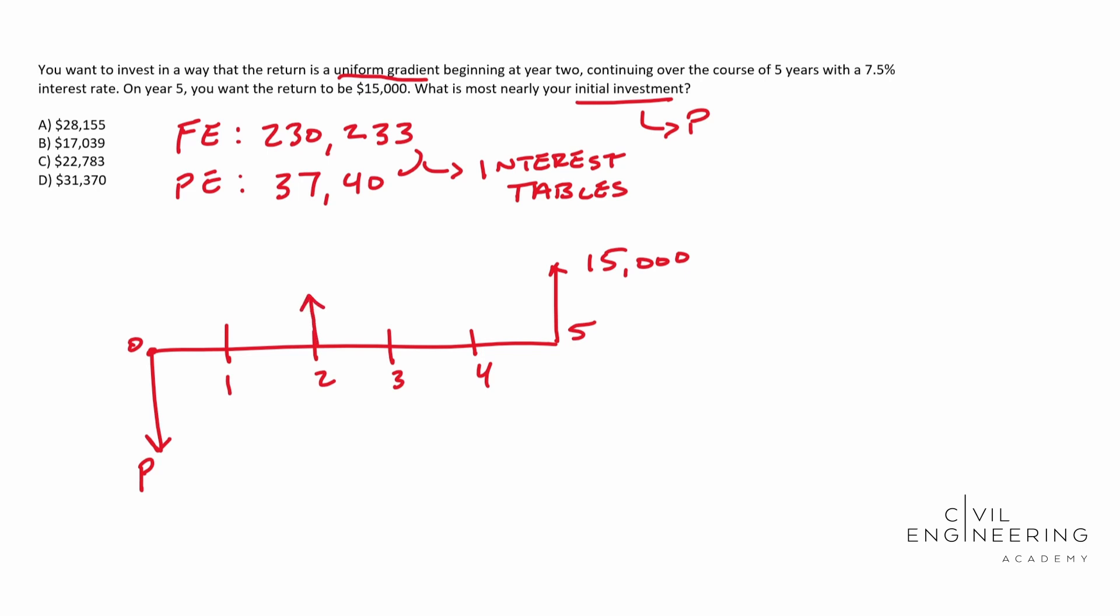So at year two, we have this thing called G. And then at year three, we have another G added on. So we have two G. And then at year four, we have another G. So guess what? That's three. And then at year five, we have four G. So this is equal to four G. And I wrote that because it's very, very important for this problem to figure out what G is. So G is actually going to be 3,750. And the reason why I needed to solve that is because it's in the formula and we can't solve the formula without having a G.